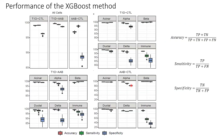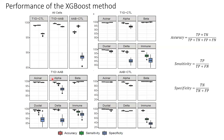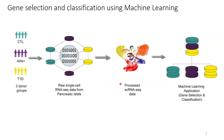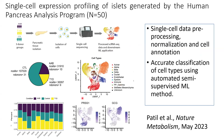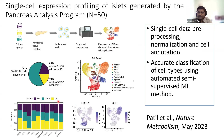Any comments on the ductal cells? In the single cell data, ductal cells are very high in T1D compared to control. Biologically, I'm not sure why, but from our previous work it looks like type 1D might have some good proportion of ductal cells.